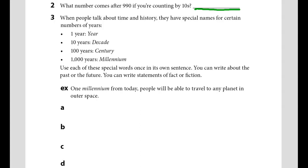We are going to use each of these special words once in its own sentence. You can write about the past or the future. You could write a statement of fact or fiction. For example, you could write a sentence like this. One millennium from today, people will be able to travel to any planet in outer space.